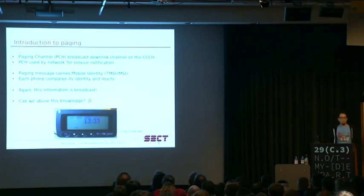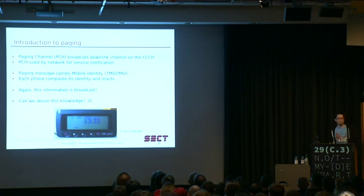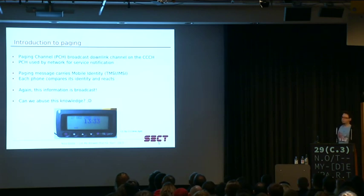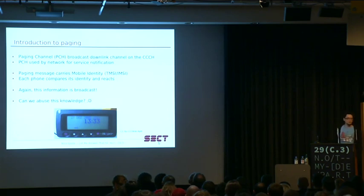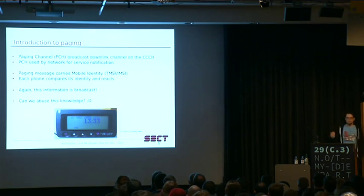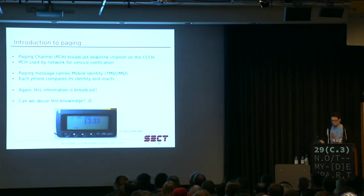On this paging channel, the network sends messages called paging requests. Those messages contain a mobile identity. The interesting types for this talk are the temporary mobile subscriber identity (TMSI) and the international mobile subscriber identity (IMSI). The IMSI is basically the identification of your SIM card. Because this information is transmitted over the air in clear text, operators don't use it much — it allows people who observe air traffic to track subscribers. So these days they use TMSIs, which are shorter numbers, temporary and which change fairly frequently, thus preventing tracking.